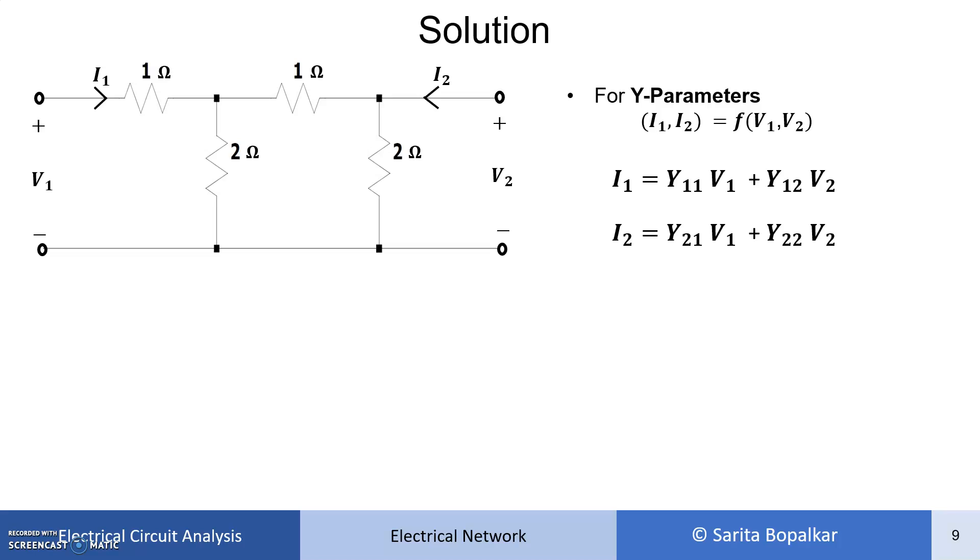To find Y11 and Y21, we can make V2 equal to zero, which means short circuit the output port. To find Y12 and Y22, we can make V1 equal to zero by short circuiting the input port. But I am going for the second method. For that, we are applying KCL at the nodes present in the network. To apply KCL, first note down what are the nodes.